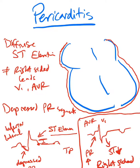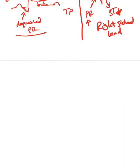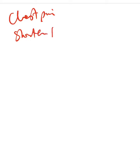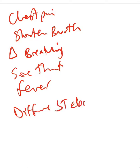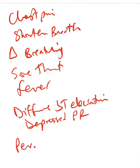The exam question will likely not show you the right-sided lead picture directly. They might just tell you a patient came in with chest pain, shortness of breath that changes with respiration, and that the patient had a sore throat and fever a week before. They did an EKG showing diffuse ST elevations, possibly with depressed PR. That is the classic exam case for pericarditis.